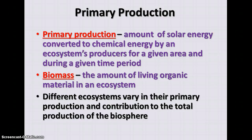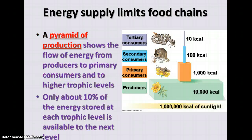Primary production is the amount of solar energy converted into chemical energy by producers in an ecosystem for a particular area during a particular time period. The total amount of living organic material in that ecosystem is called the biomass. Different ecosystems differ in their primary production, and how much they contribute to the total production of the biosphere depends on the components of that ecosystem. The energy supply limits the food chain — there is a lot of energy at the producer level, but as energy in terms of calories moves through the food chain, each subsequent consumer level receives less and less. This is called a pyramid of production.